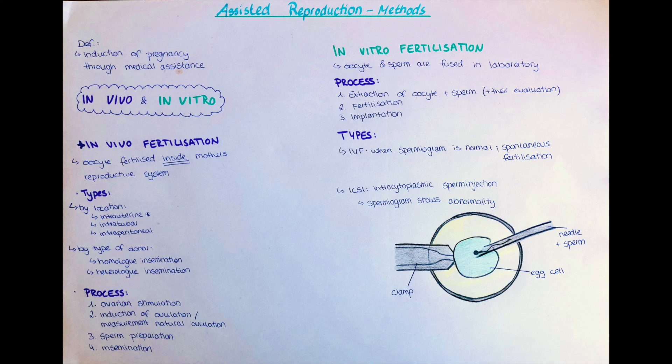The next type of assisted fertilization is in vitro fertilization. Here the oocyte and the sperm are fused in the laboratory, and the embryo will be implanted into the uterus later. Today it is common practice to implant one, sometimes two embryos, but usually not more than that. It is a three-step process: extracting the egg and sperm and evaluating them, then fertilization, and then implantation.